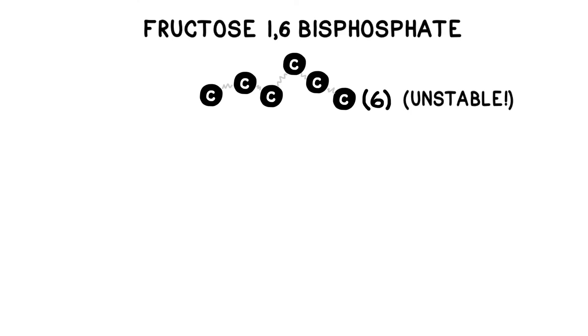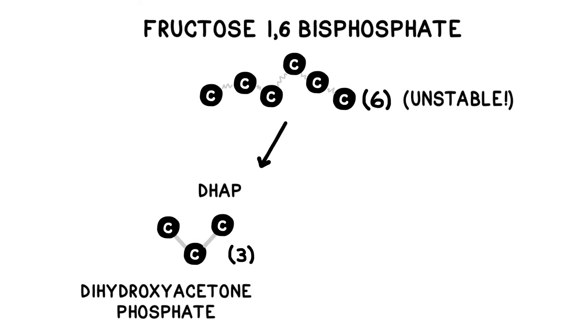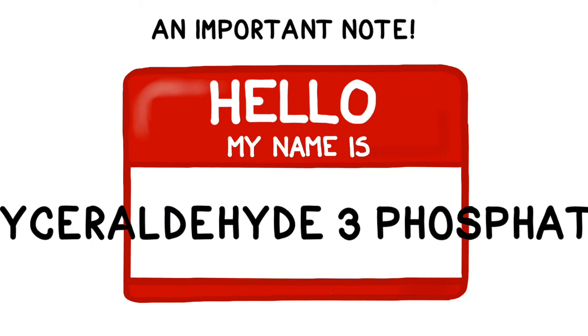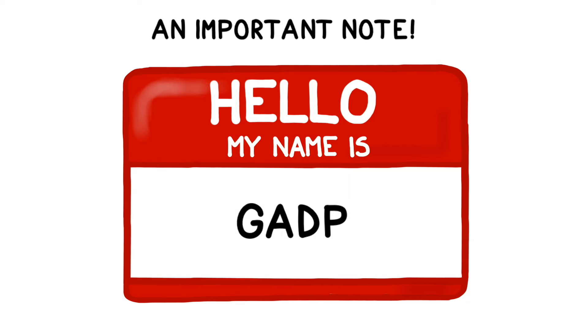Then this molecule splits into two kinds of three-carbon molecules, DHAP, dihydroxyacetone phosphate, and PGAL, glyceraldehyde-3-phosphate. Eventually, all the DHAP converts into PGAL, a more useful molecule for our purposes. Note that glyceraldehyde-3-phosphate is a really long name, so luckily it has several nicknames. Different parts of the world use GALP, G3P, GADP, etc., all to refer to the same molecule.